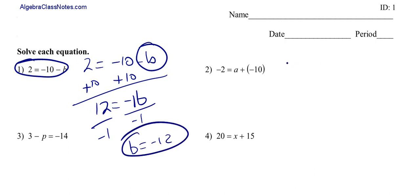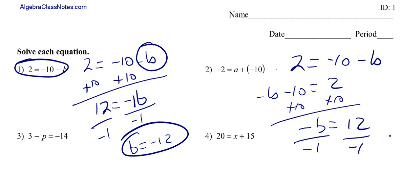So let's look at that one again. 2 is equal to negative 10 minus b. If you want, you can just flip this. Sometimes people like their variable on this side over here. Still add 10 to both sides, negative b is equal to 12. Divide both sides by negative 1, and b is equal to negative 12 once again.